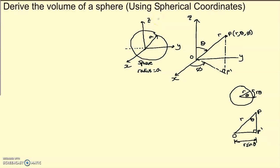In this video I would like to derive the volume of a sphere, and I'm going to use spherical coordinates to do that. It's going to be much simpler than using Cartesian coordinates. Suppose we have a sphere of radius a and we would like to derive its volume. Its volume is 4/3 π a³, where a is our radius. So we want to derive that formula.